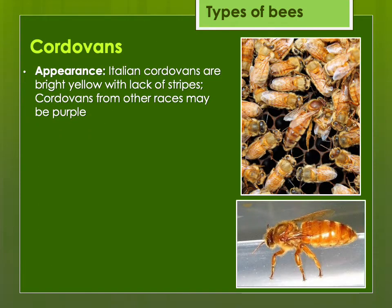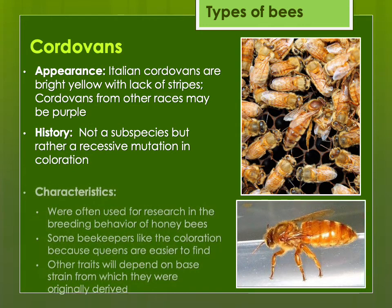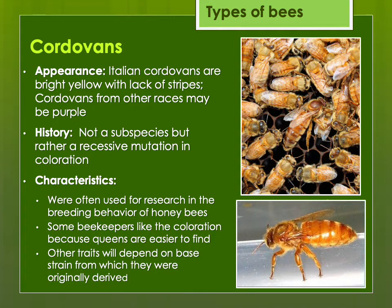Cordovans are not so much a different strain but a different color due to a recessive genetic mutation — not really a subspecies or strain. Originally developed for research to study breeding behavior of honeybees, some beekeepers like the color because queens are easier to find and they simply think they're pretty. The other qualities and characteristics will depend on what strain they originally came from. This color can be found in many types of bees, but those from Italians can be bright yellow, while other races may be more of a purple color.